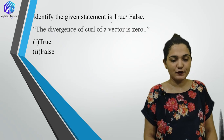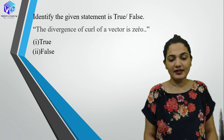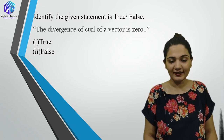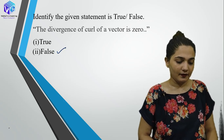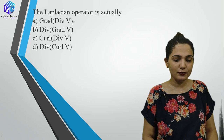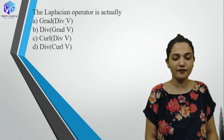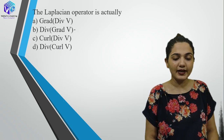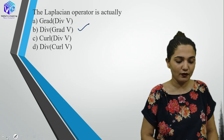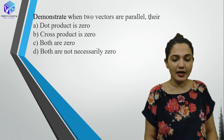True or false: the divergence of curl of a vector is always 0. This is actually false — divergence of curl is not always zero. Coming to the next question: the Laplacian operator is actually divergence of gradient of V.